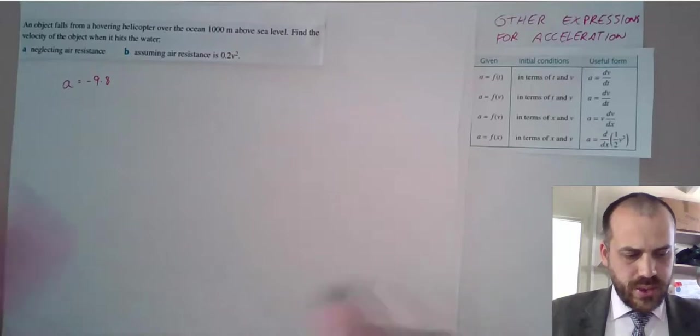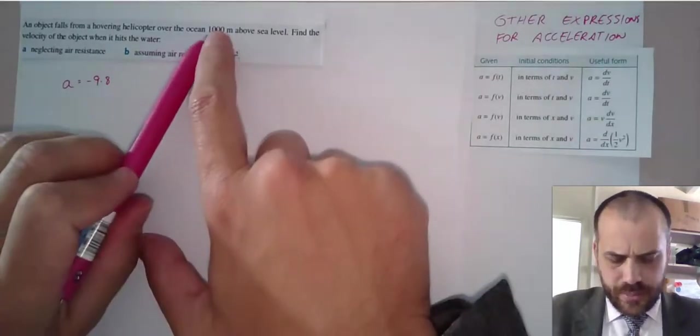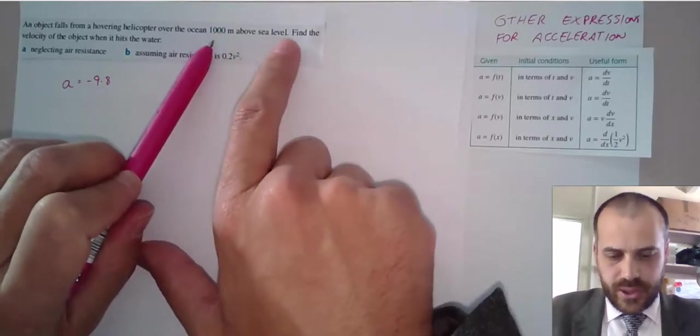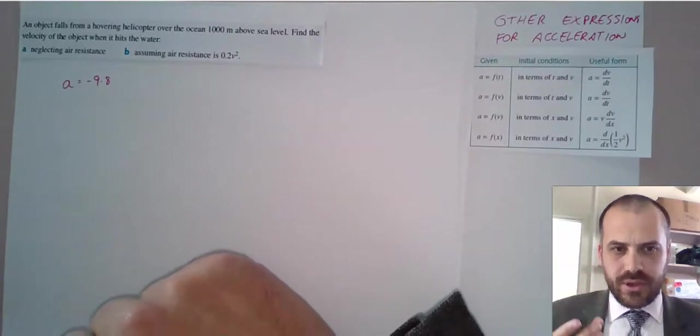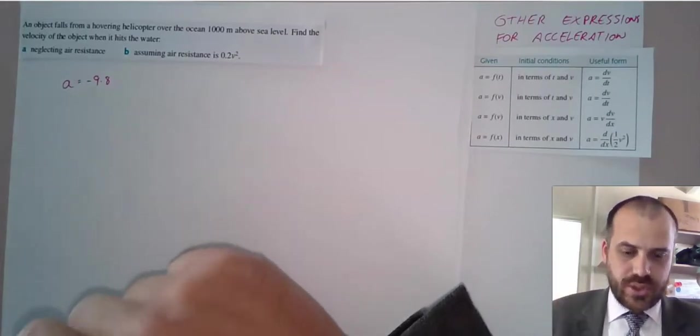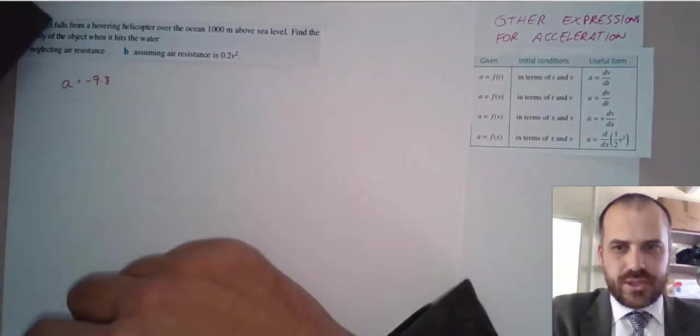Well, what are we given? We're definitely given a position, 1000 meters above the sea level. What else? If it was dropped, its initial velocity was zero. And what else? If it was dropped, we could assume that time was zero. So I guess we've been given all of those as initial conditions.